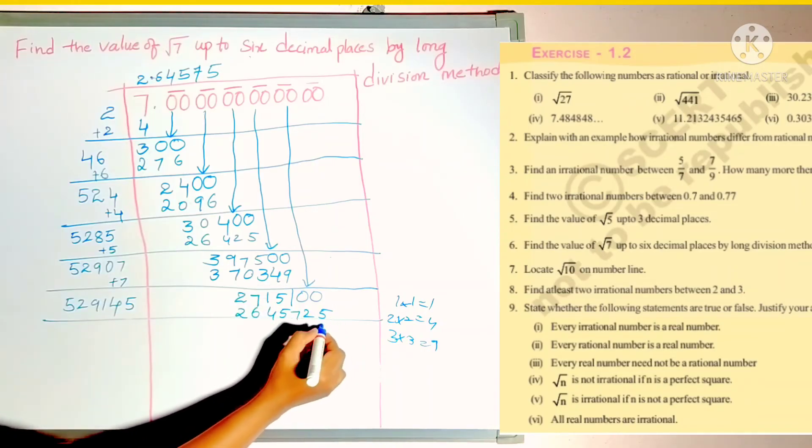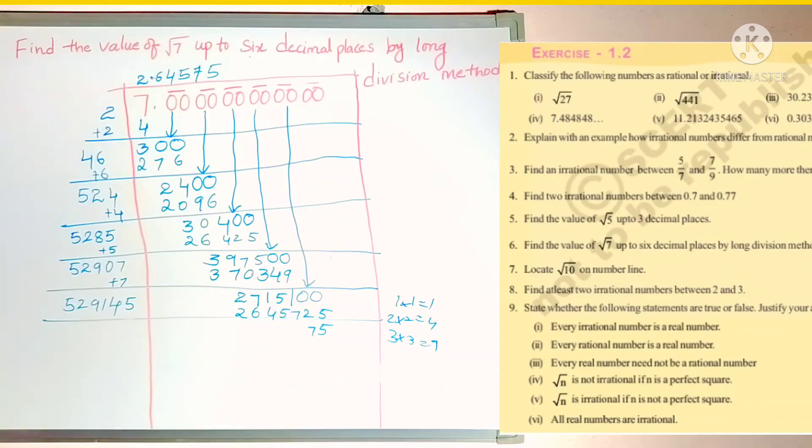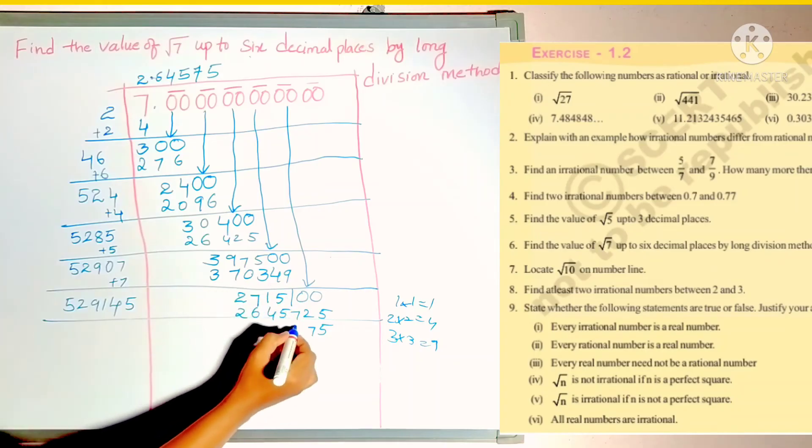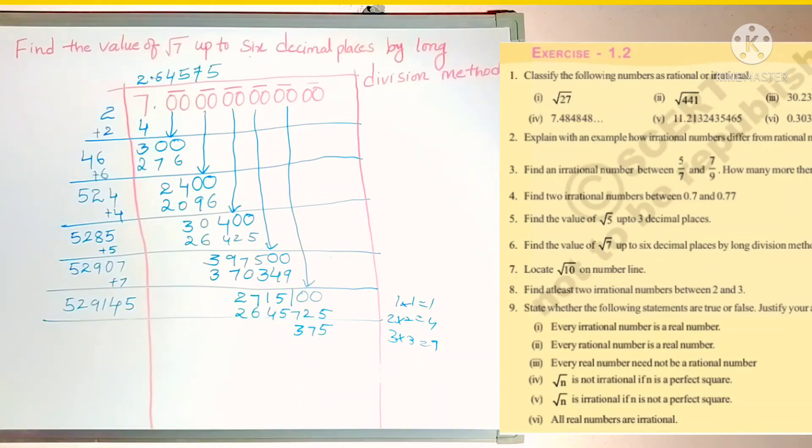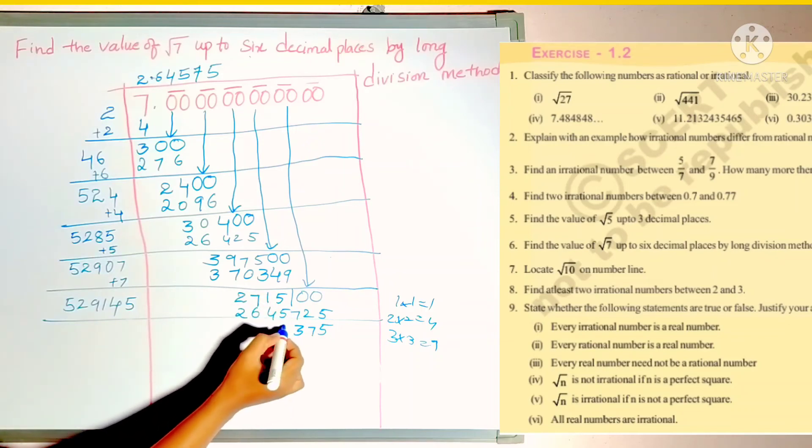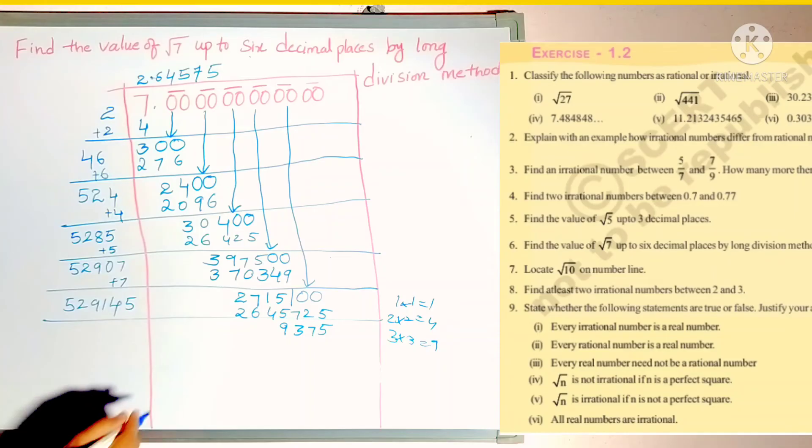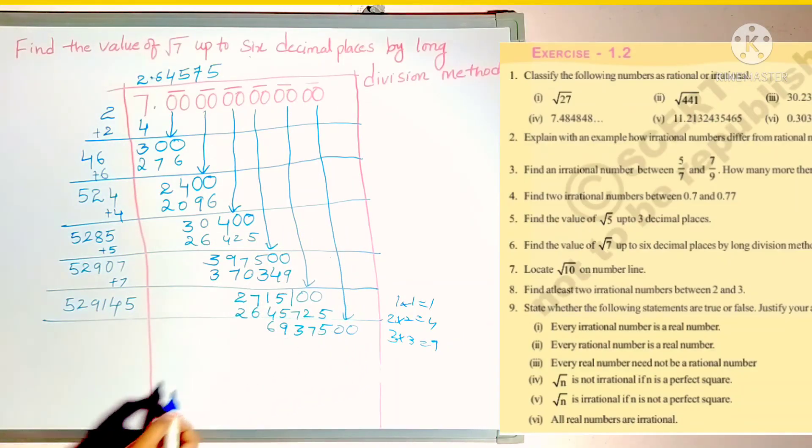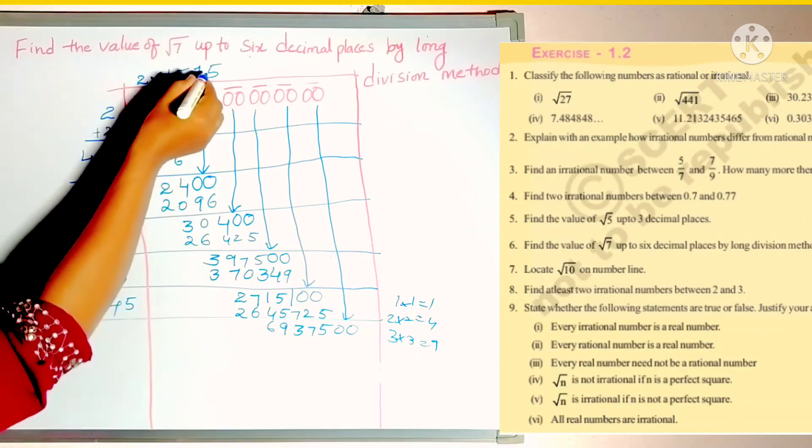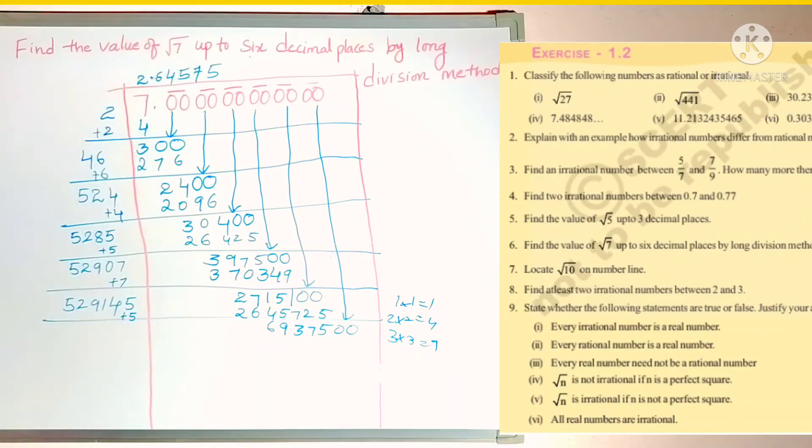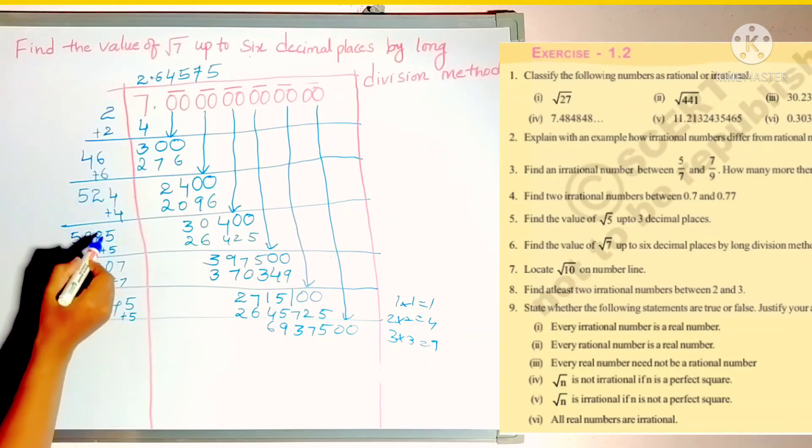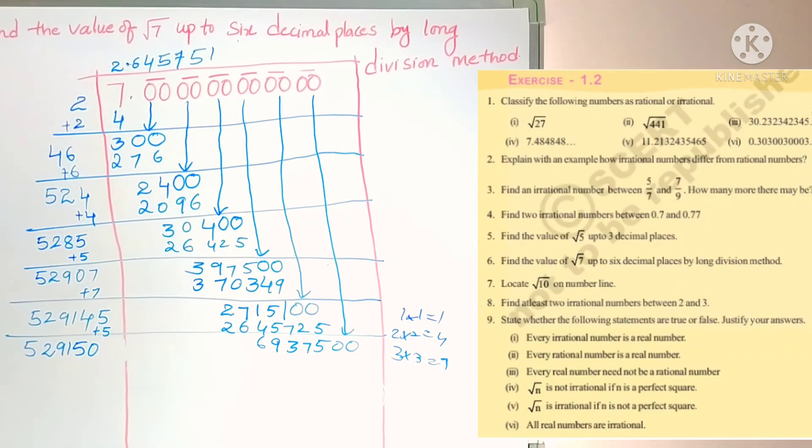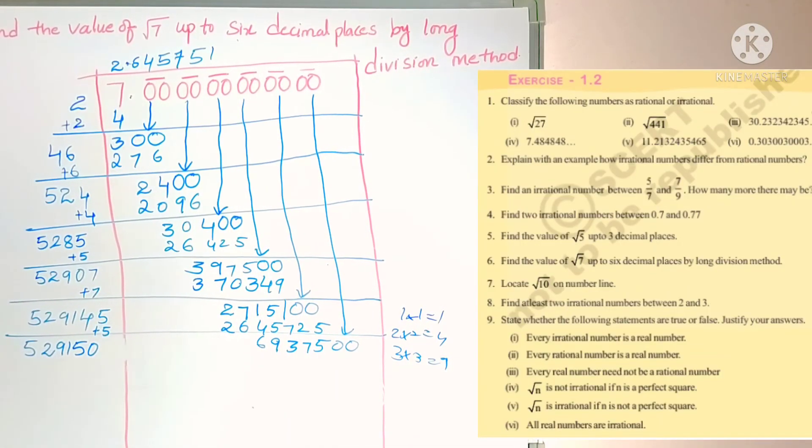After subtracting, 5, 9 minus 2 is 7, 3. 10 minus 7 is 3. And here 14 will be there. Now if we borrow, 9. Again 10 minus 4 is 6. We wrote 6 only. So next pair of zeros write down. Here we wrote 5 in the quotient. Just add that 5. Every time you have to add the last digit to the previous. So if you add, after adding 5 we get 50. Here, so 52. This is 529,150.